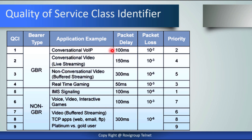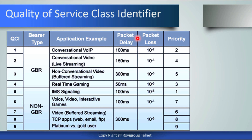In the GBR service, we have conversational voice or IP service with priority 2 and a packet delay of 100 milliseconds. In non-GBR service, IMS signaling has the highest priority. By priority, we mean that scheduling is done based on the priority of the service. GBR application examples include conversational voice or IP, conversational video, live streaming, non-conversational video, and real-time gaming — all with guaranteed bit rate bearer type, different packet delay and loss requirements, and different priorities.